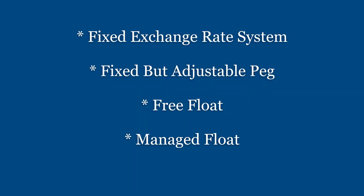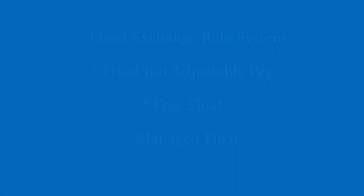So to summarize: the exchange rate system includes the fixed exchange rate system and the floating exchange rate system. Under fixed, we have fixed with adjustable peg. Under floating, we have free float and managed float. These are the key concepts of exchange rate mechanisms. Thank you.